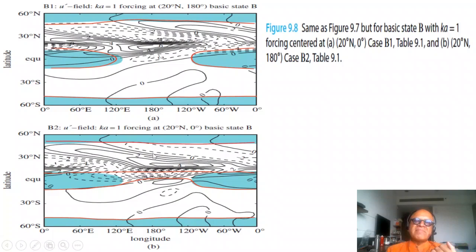Basic state matters, zonal variations of the basic state matter, where the perturbation is put matters, and we'll see in a minute that the scale of the perturbation matters as well. Ka equal 1 is a large scale perturbation which can be larger than the westerly duct. You can see that there is more penetration of the perturbation into the deep tropics here than here. Even though the forcing is away from the westerly duct, the scale of the forcing is such that you get a different response. We'll see the wavelength scales and so on in a minute as a table.